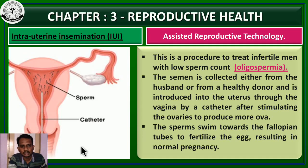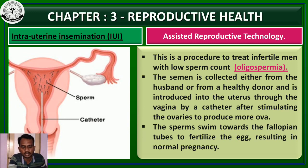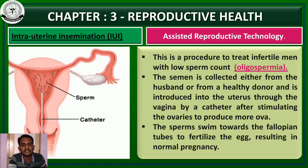Welcome back students. Last class we completed infertility and their causes — what is meant by infertility and what are the reasons for infertility. These are two topics we covered last class. And in this part, I am going to explain what technology is available for an infertility person. Let's move on to the topic.